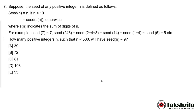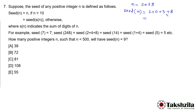Question number 7: The seed of any positive integer n is defined as follows — seed(n) = n if n is less than 10; otherwise seed(n) = seed(s(n)) where s(n) is the sum of digits of n. For example, seed(7) = 7; seed(248) = seed(14) = seed(5) = 5. Another example: seed(2038) = seed(2+0+3+8) = seed(13) = seed(1+3) = seed(4) = 4.